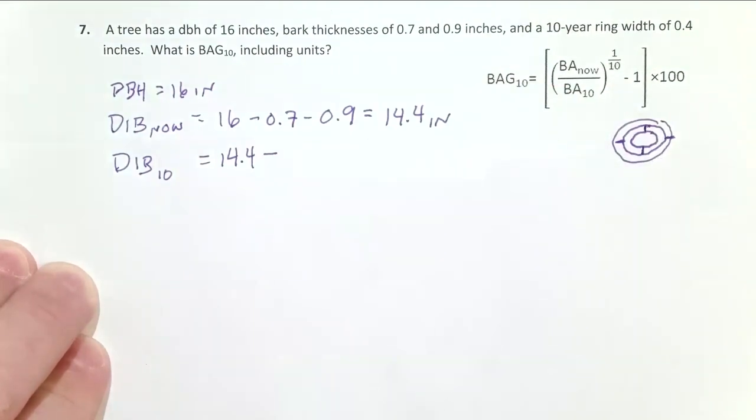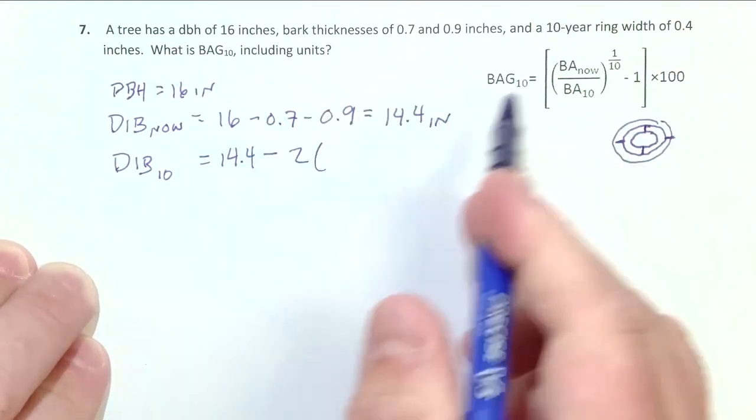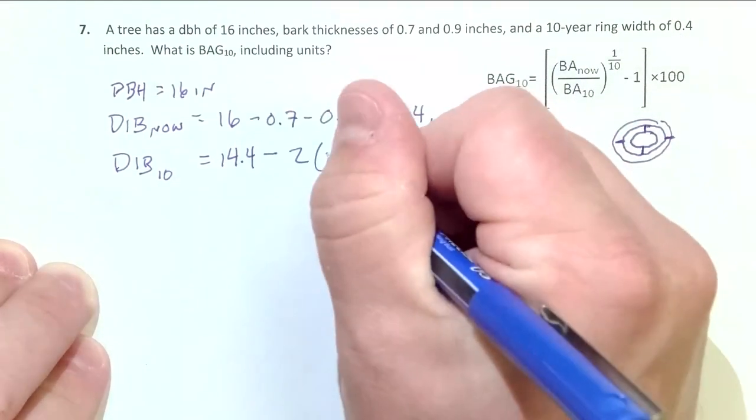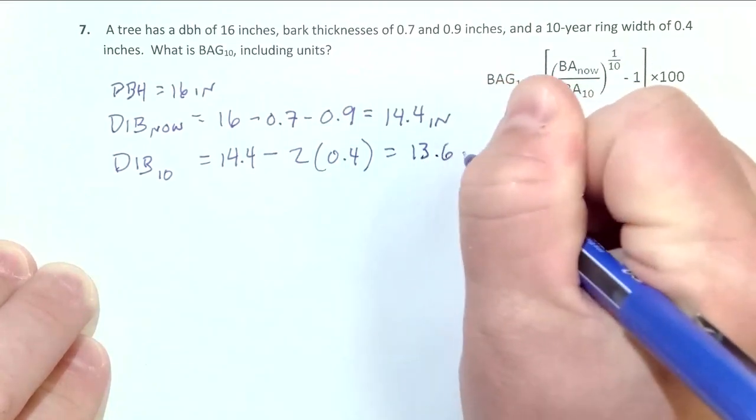And so I'm going to do two times 10-year ring width, which was 0.4 inches in this case, 0.4, and that equals 13.6 inches.